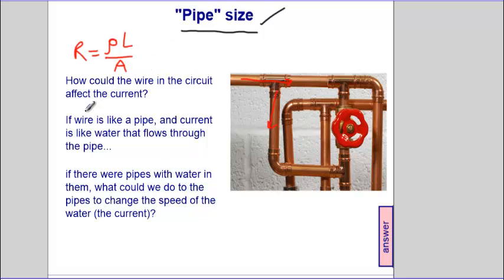Talk about this in a second. If a wire is like a pipe, current is like water that flows through the pipe. So we can see here these waters would be currents. If there were pipes with water in them, what could we do to the pipes to change the speed of the water or the current?